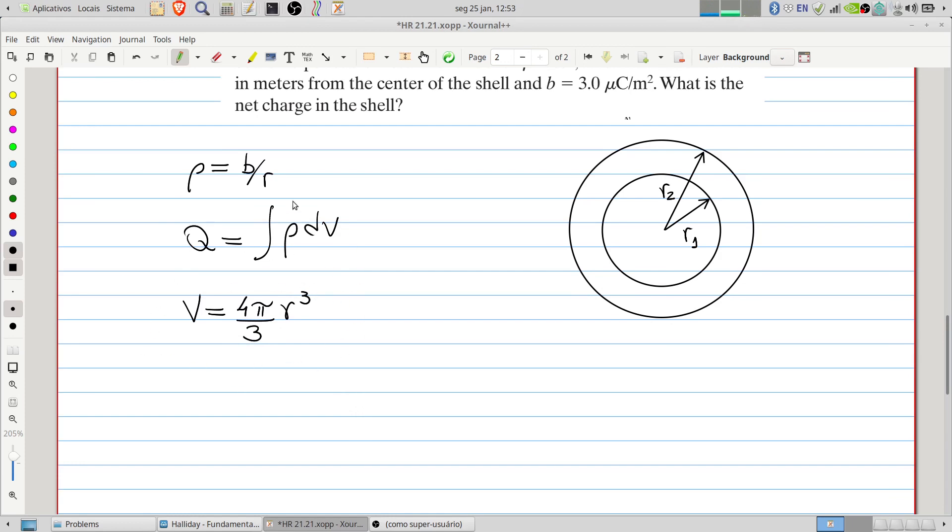And if you want to integrate in the radius, because we have the density written as a function of the radius, it's necessary to differentiate here considering the radius. So we will have the infinitesimal volume, which can be written as 4πr² dr.